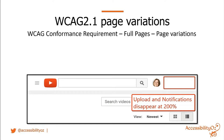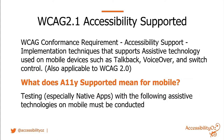WCAG 2.1 stresses accessibility supported, also required in 2.0 — that whatever techniques a technology has to assist accessibility need to be used. For native apps, this means you must be testing with assistive technologies, because there's no access to the code like there is with a mobile site. I'm a big believer in making sure assistive technology testing is done by people with disabilities who are reliant on those technologies.